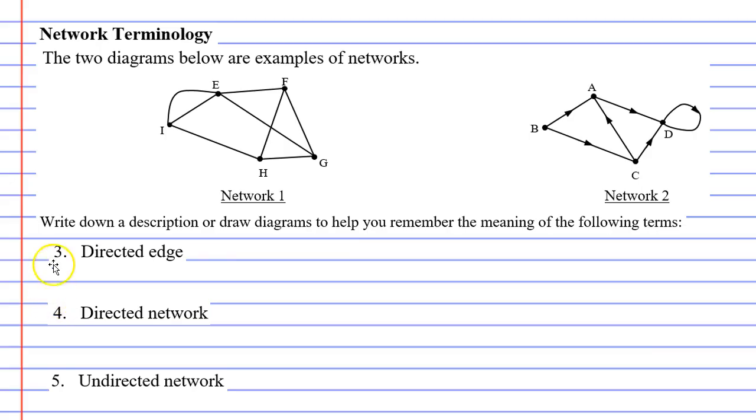We're now going to look at terms three to five. The third term we're looking at is called a directed edge. Basically a directed edge is an edge with arrows on it. We can actually see this in the second network diagram. Why do they have arrows? For instance we can see an arrow going from vertex B to vertex A. What that means is that if I'm traveling I can only go in the direction from B to A. I can't travel from A to B.